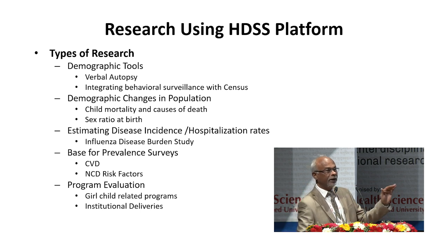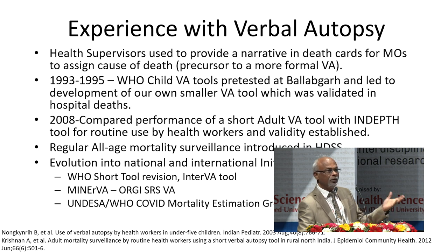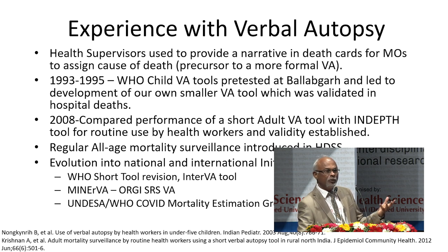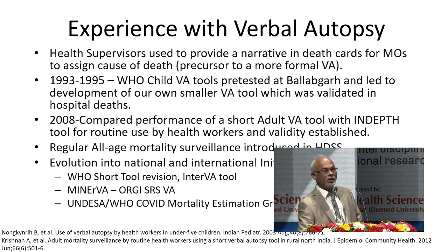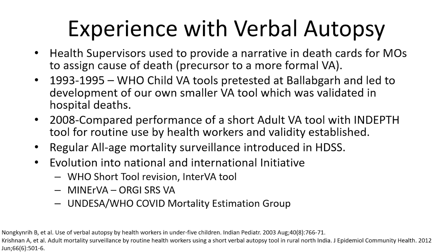How can we use a computerized dataset like that to answer important public health problems? As I already said, you have to add layers of health and public health programs into it; otherwise it will not add value. The first example is verbal autopsy. One of the most important demographic outcomes is death, and we also want to know how people die — what is the cause of death. In India, only 20% of deaths occur in hospitals; almost 80% occur outside hospitals. For those you will not have a cause of death unless you go to their homes and do an interview, which is what is called a verbal autopsy.